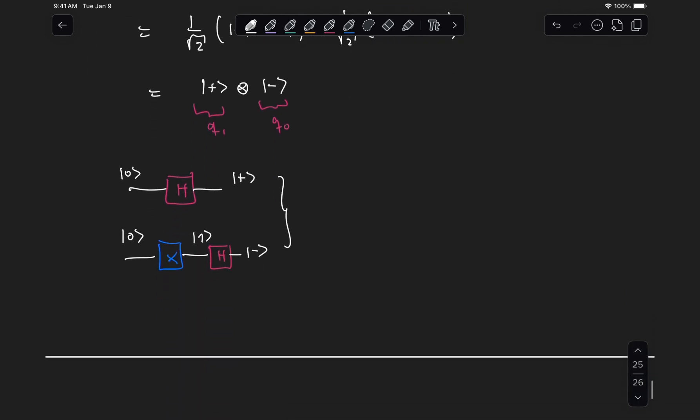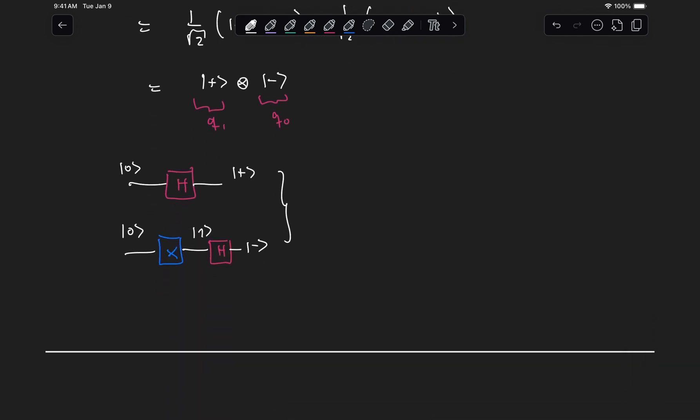Now to give you an example of something that is not separable, we can have the state one over root two, zero, zero, plus one, one. And if you see here, there's no way we can take this zero and factorize it out of anything, right?